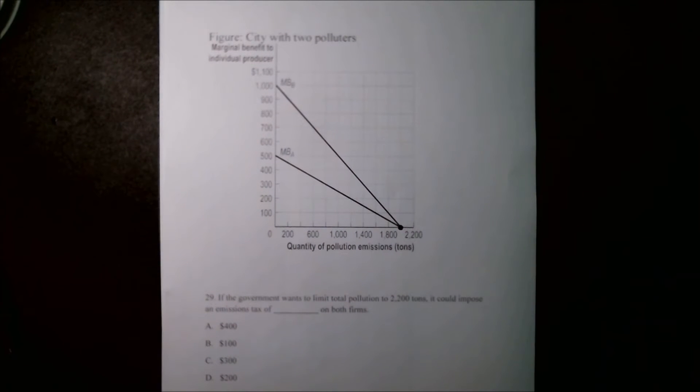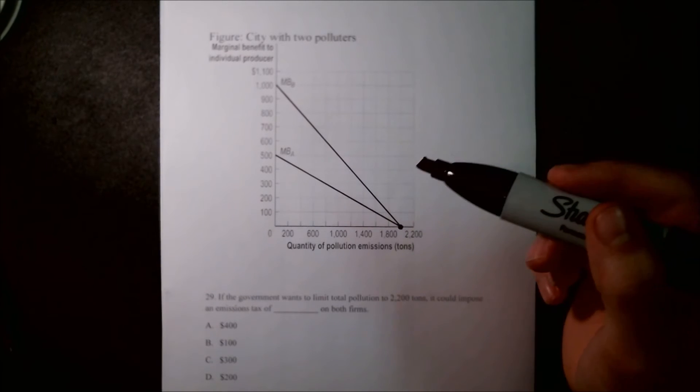In order to bring it down to 2,200, we're going to have to impose a pretty high tax. Since this is a multiple choice problem, we're given our options in the multiple choice answers. So we can go down the list and graph with A.